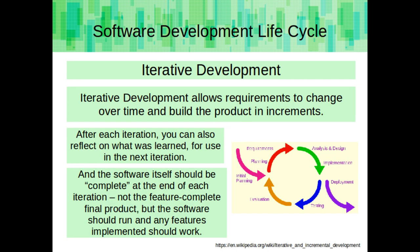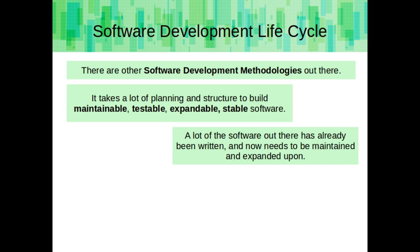Iterative development allows requirements to change over time and to build the product in increments. After each iteration, you can reflect on what was learned for use in the next iteration. The software itself should be complete at the end of each iteration — not the feature-complete final product, but the software should run and any features implemented should work. It takes a lot of planning and structure to build maintainable, testable, expandable, and stable software. A lot of the software out there has already been written and now needs to be maintained and expanded upon.